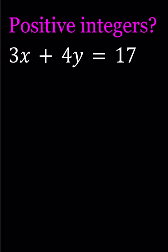We're going to be solving this Diophantine equation for positive integers. First of all, notice that if x is 1, which is the smallest possible value, then 4y is going to be 14, but that's not going to work.